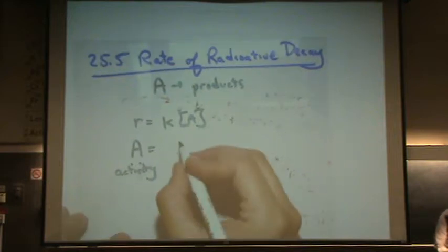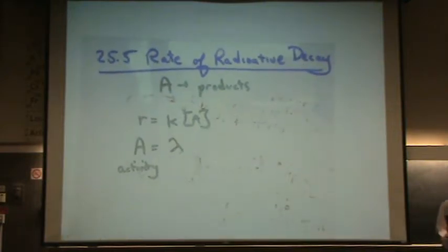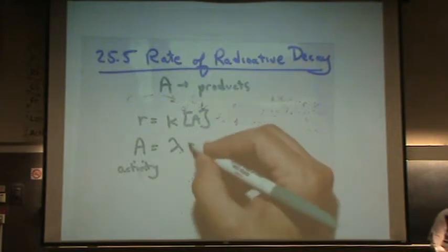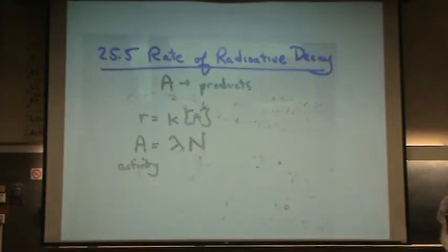The K is called a lambda. It's still the rate constant, it's just called lambda. Instead of concentration of A, they usually write like a capital N, meaning number of particles.